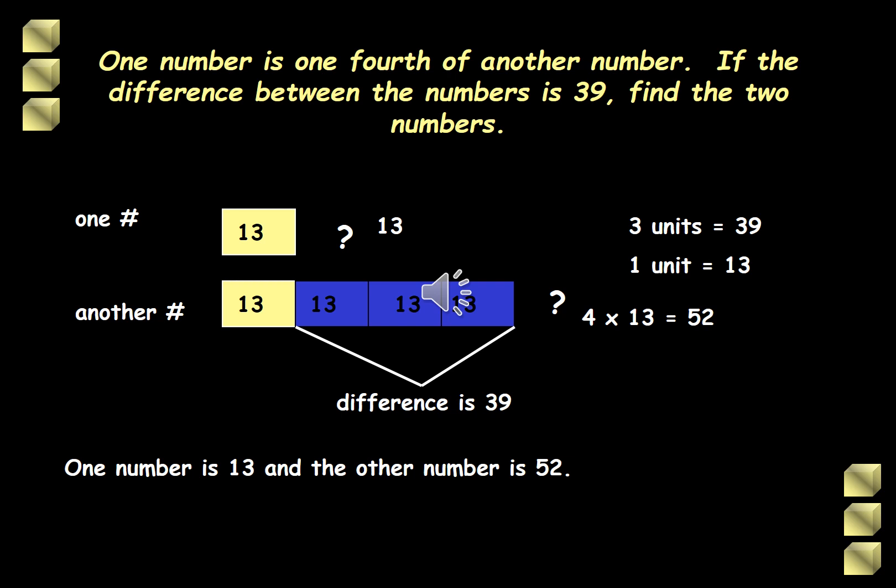And by that, we now have our answer. So the first number, which is one-fourth of the bigger number, is just equal to 1 unit or that's 13. And the bigger number is just equal to 13 times 4, meaning there are 4 units. That gives us 52.